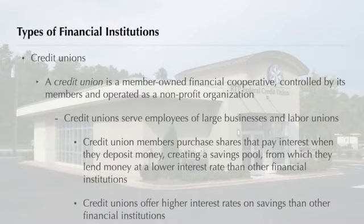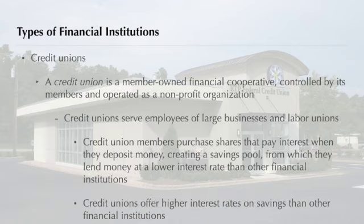Employees of large businesses and institutions and members of large labor unions often belong to credit unions. Today approximately 11,700 credit unions are in operation in the United States. When credit union members deposit money, they purchase shares that pay interest. Credit unions use this savings pool to supply low-cost loans to their members. Credit unions usually offer higher interest rates on savings and lower interest rates on loans than do other financial institutions. Personal, automobile, and home improvement loans account for the majority of loan activity.